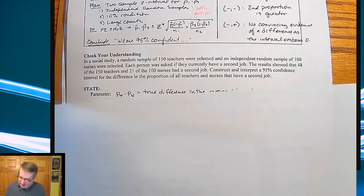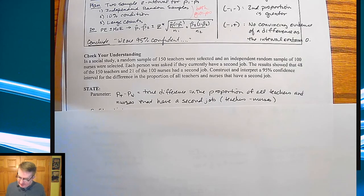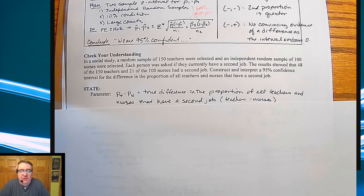All right. So first of all, state. So the parameter that we're going for is P sub T minus P sub N or the proportion of teachers minus the proportion of nurses is the true difference in the proportion of all teachers and nurses that have a second job.